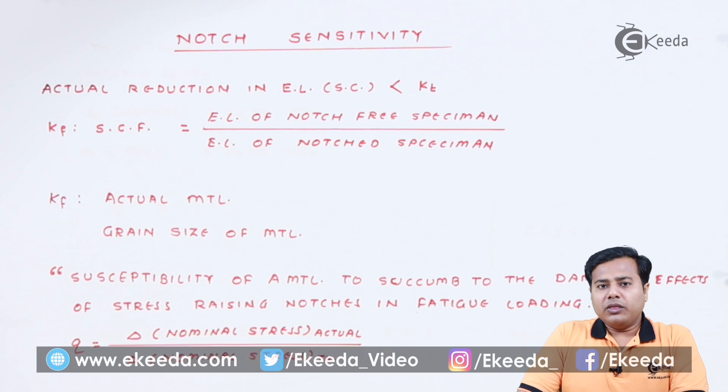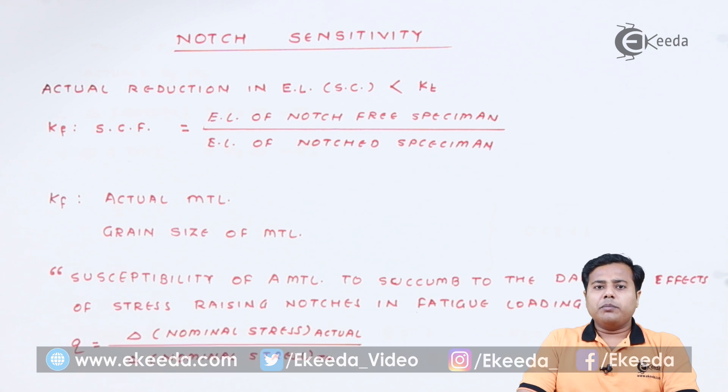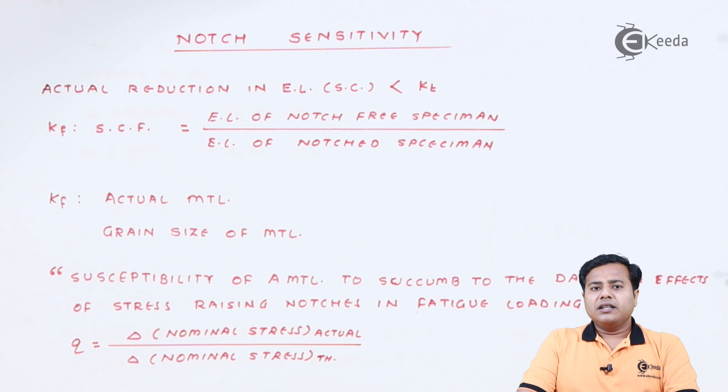Notch is an imperfection that is present deliberately or by mistake in a product. In such a case, the endurance limit will have a different value as compared to the product which has no notch. But it was estimated and it was found that the actual reduction that takes place in the endurance limit... of course, whenever the imperfection remains present, the endurance limit will definitely come down.